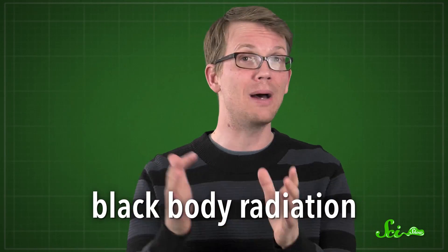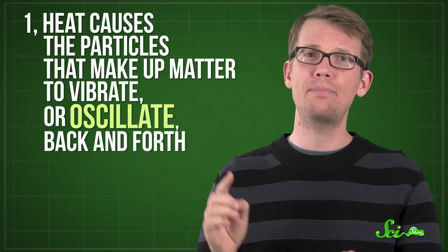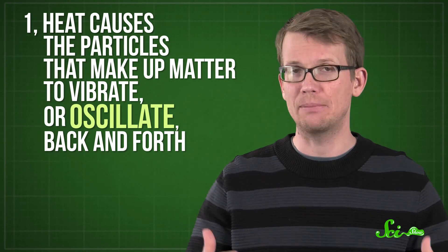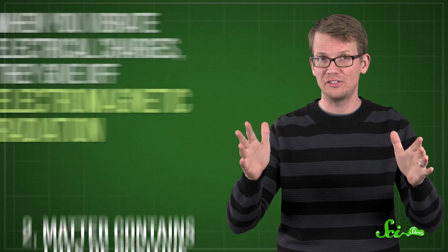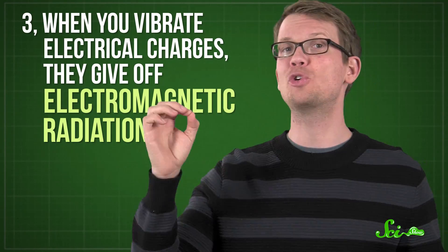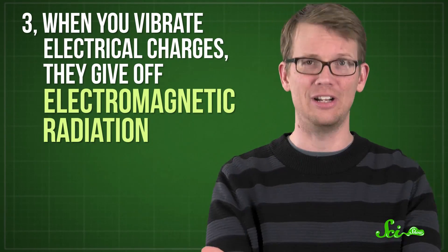Anyway, Kirchhoff laid down a challenge to physicists. Measure and explain how the radiation given off by a black body, or black body radiation, varies by wavelength and temperature. Over the next few decades, the scientific community assembled a few key facts. One, heat causes the particles that make up matter to vibrate, or oscillate, back and forth. Two, matter contains lots of positive and negative electrical charges. And three, when you vibrate electrical charges, they give off electromagnetic radiation. So, it was a reasonable guess that the reason hot things glow is that the charges inside give off radiation as they vibrate from the heat.